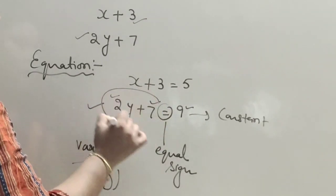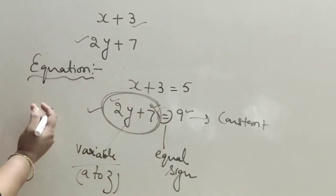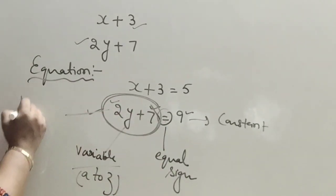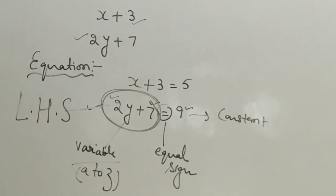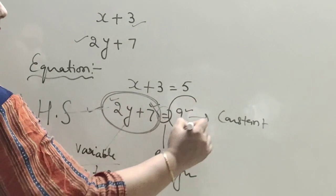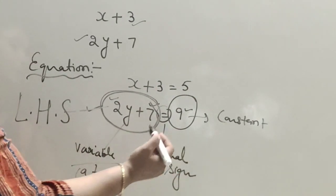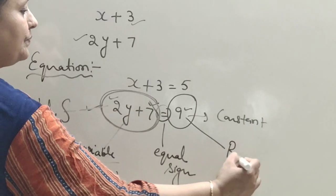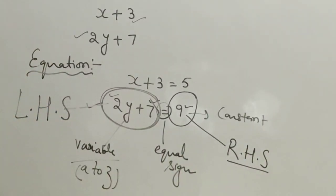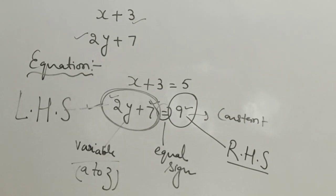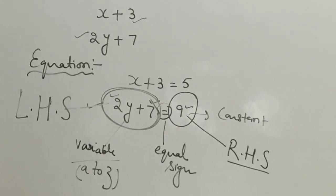The portion of this equation — 2y plus 7 — is called the left-hand side of the equation. The part on the right side of the equal sign is called the right-hand side of the equation. In this chapter, we will cover the basic concepts based on equations.